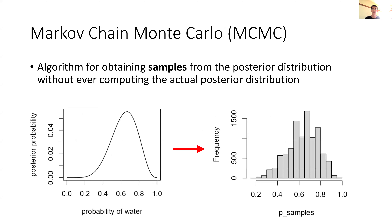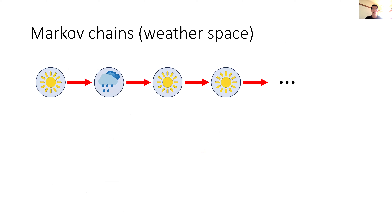This finally brings us to Markov Chain Monte Carlo, or MCMC. From the globe-tossing example, we found it was much easier to work with samples from the posterior than the distribution directly. MCMC algorithms are used to obtain samples from the posterior without ever computing the actual posterior distribution. These are extremely powerful and useful in practice because most of the time we can't compute the actual posterior — usually due to high dimensionality where grid approximation fails. MCMC algorithms let us obtain samples from the posterior without the need to actually compute the posterior.